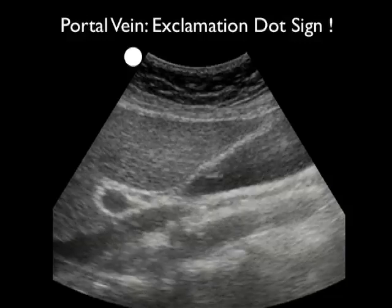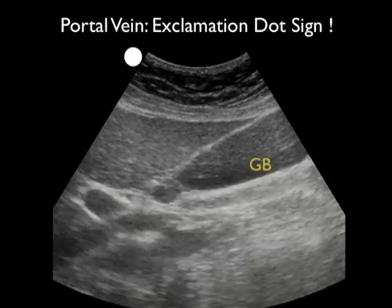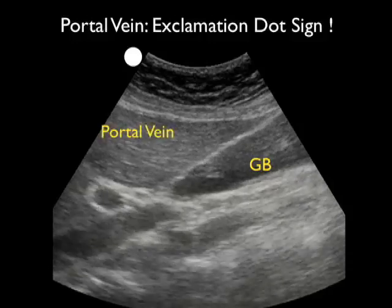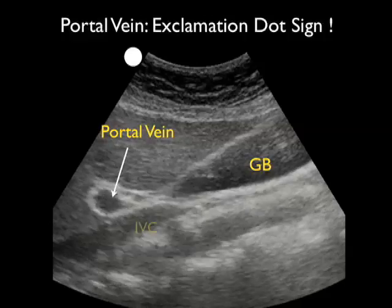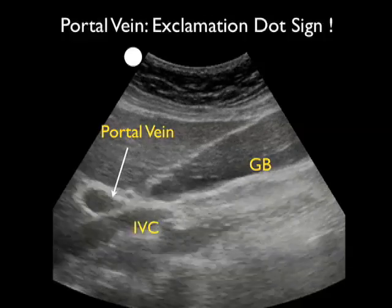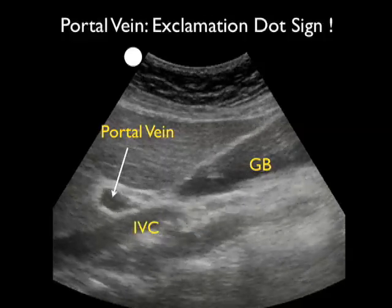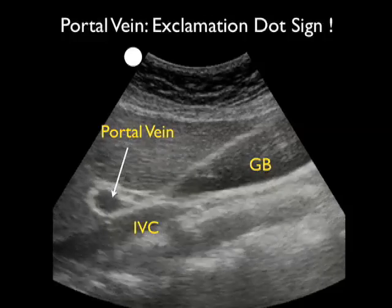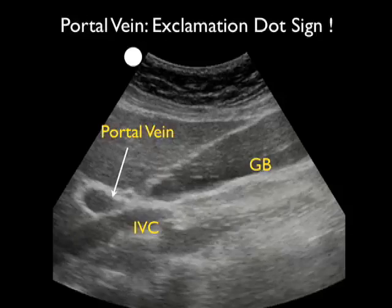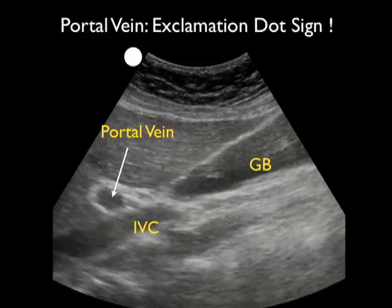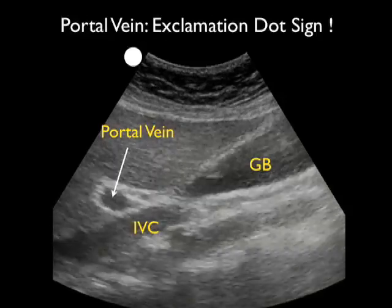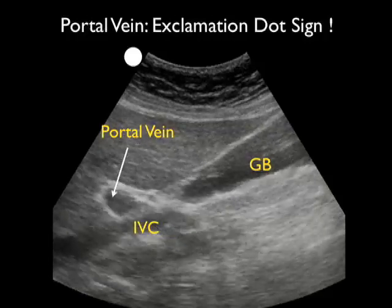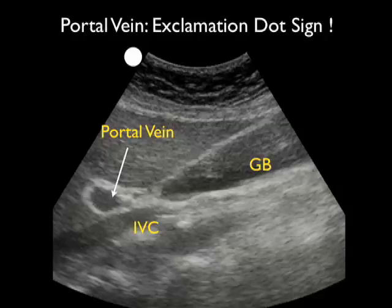Here's an ultrasound image showing the portal vein exclamation dot sign. We see the gallbladder to the right making the exclamation, and the dot — the portal vein — to the left. Notice that the portal vein has hyperechoic walls due to the fact that it's bringing fatty blood from the intestine to be filtered by the liver. We see the white line connecting the gallbladder to the portal vein — the median lobar fissure — and posteriorly, we see the inferior vena cava.